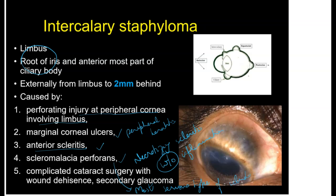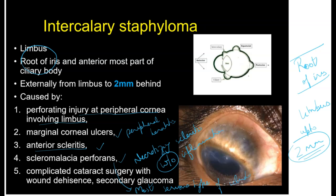For intercalary Staphyloma, remember two key points: one, the root of the iris is involved; and two, it occurs at the limbus up to 2 mm behind the limbus.